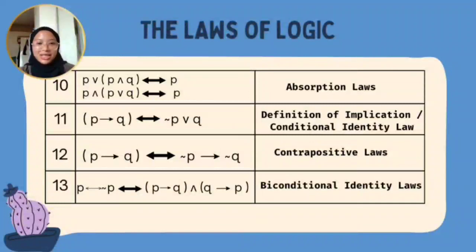The last law is the Biconditional Identity Law. For example, if P biconditional Q, it becomes P implies Q and Q implies P.